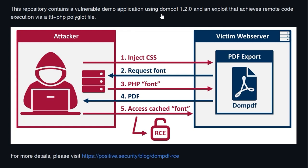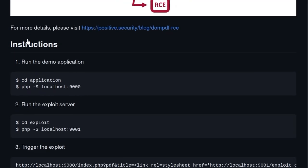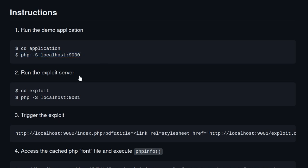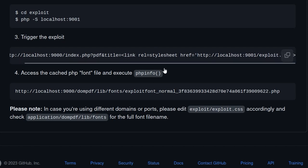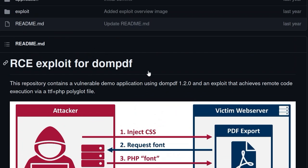There's a demo application and exploit so you can test locally. The attack summary: dompdf 1.2.0 is vulnerable to remote code execution via a TrueType font and PHP polyglot file. The attacker injects CSS into the PDF exporter, the PDF exporter requests the font from our server, we deliver a malicious PHP font, it sends back the PDF, and then we can find that cached font which is actually a malicious PHP script. We can clone this repo and run the exploit server - the only thing is it's currently set to call phpinfo, so we'd want to change that to a reverse shell.